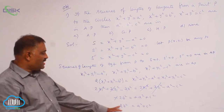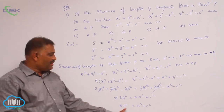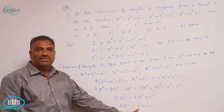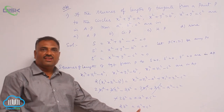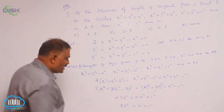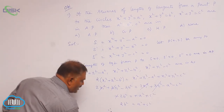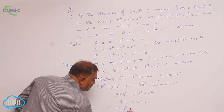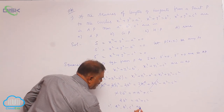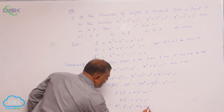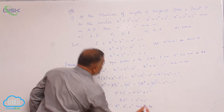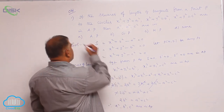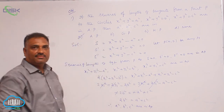Here again we see that twice the middle term equals the sum of the first and last term. Therefore, a², b², c² are in AP. So option A is correct.